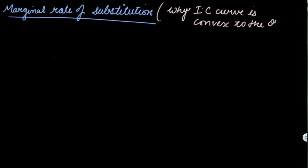Hello class. In this class, we will study the Marginal Rate of Substitution. This is the cause of why the IC curve is convex to the origin, and this is the answer to it: the Marginal Rate of Substitution.